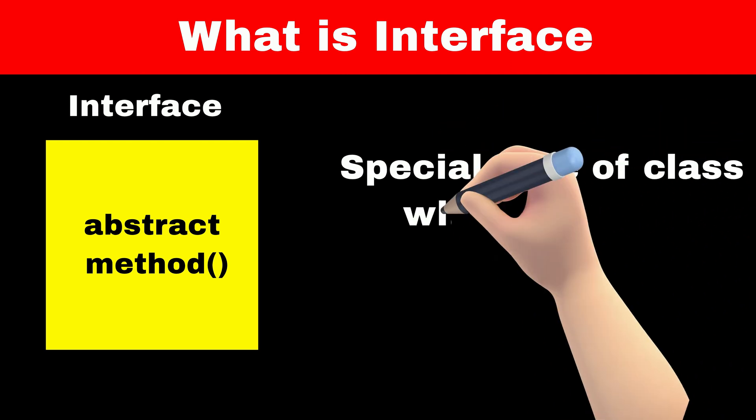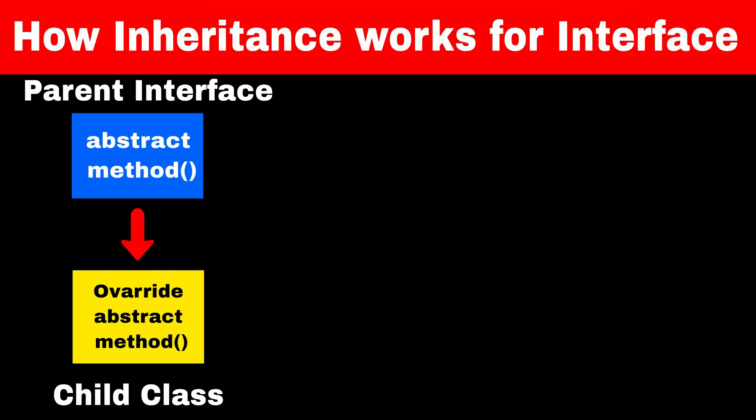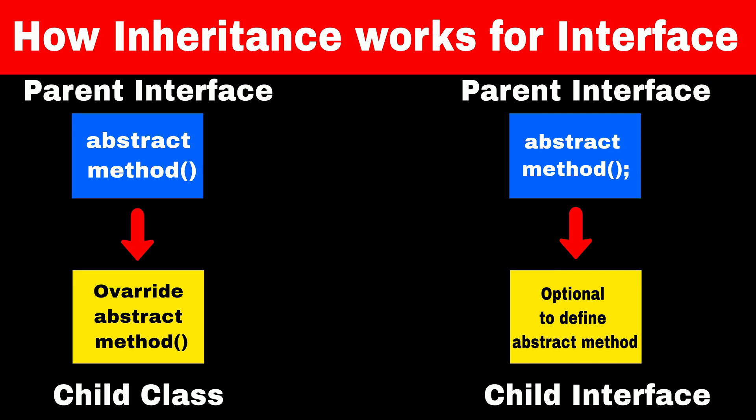Now let's see how we can solve this problem using interfaces. An interface is a special type of class which has only method declarations — it will only have default and abstract methods. All the child classes which inherit from this interface have to override the abstract method in their body, otherwise Java will throw a compile-time error. But if an interface is inheriting from another interface, then the child interface may or may not provide a default implementation of the abstract method.